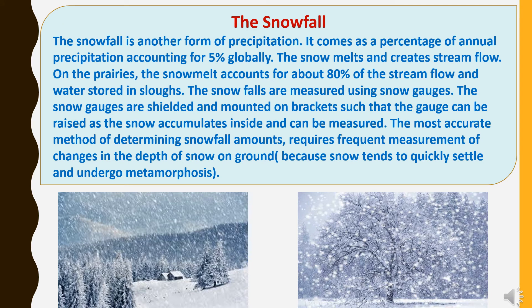Snowfall is another form of precipitation, accounting for about 5% of annual global precipitation. The snow melts and creates stream flow; on the prairies, snowmelt accounts for about 80% of stream flow and water stored in slugs. Snowfall is measured using snow gauges, which are shielded and mounted on brackets so the gauge can be raised as snow accumulates. The most accurate method of determining snowfall requires frequent measurement of changes in snow depth on the ground, as snow tends to quickly settle and undergo metamorphosis.